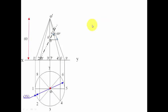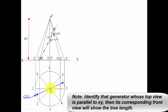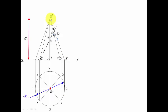Now, we need the true length. For development, we need true length. As I have already told you, you need to pick a generator. Right now, we have as many as eight generators. Out of these eight generators, there is one such generator which is absolutely parallel to XY. We can see clearly that O1 generator is absolutely parallel to this XY line. And hence, this corresponding front view O dash 1 dash will show the true length. So, let's move forward.